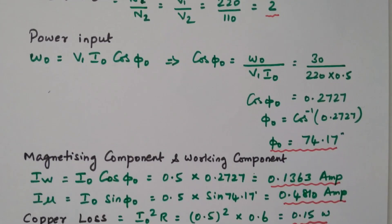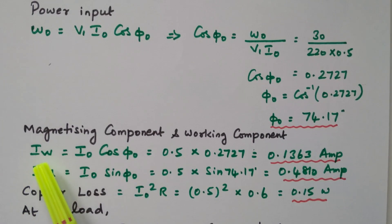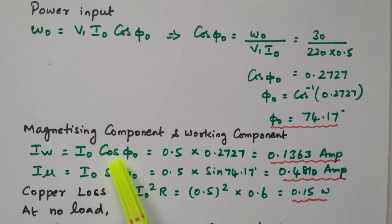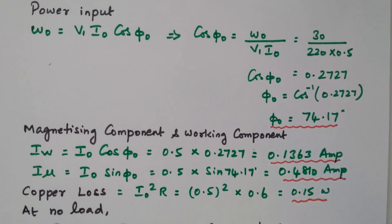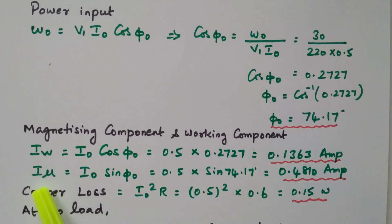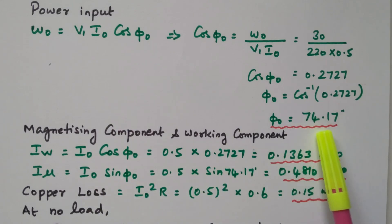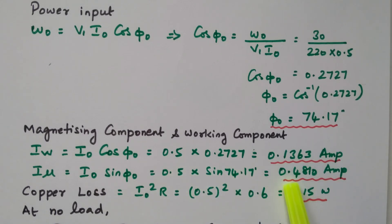Now we need to find the magnetizing component and working component. The working component IW equals I0 × cos φ0 — that is 0.5 × 0.2727 — which equals 0.1363 ampere. The magnetizing component is I0 × sin φ0 — that is 0.5 × sin 74.17 — which gives 0.4810 ampere. The magnetizing current is calculated.